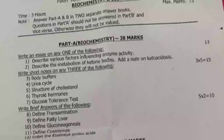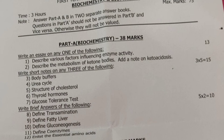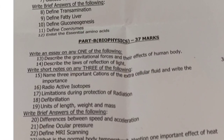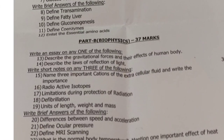So in Part A: essay is 13 marks, short notes is 15 marks, and brief answers is 10 marks. 13 plus 15 plus 10 totals 38 marks. Moving on to Part B — write the biochemistry answers in a separate answer booklet, and the biophysics answers in a separate booklet.